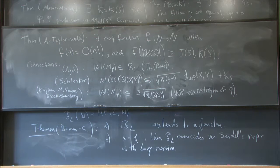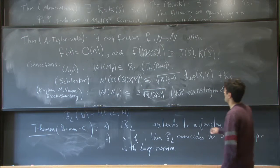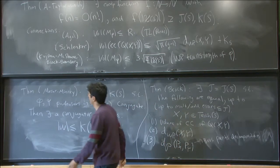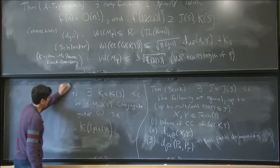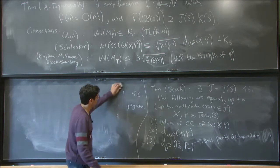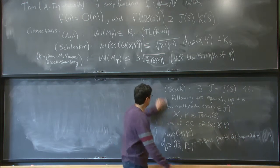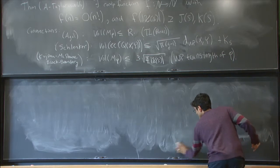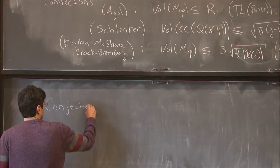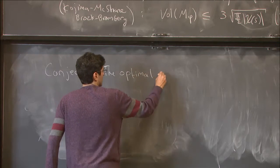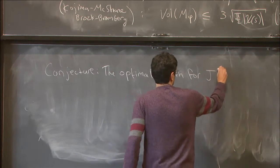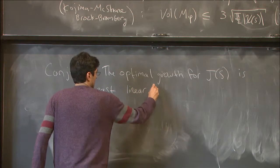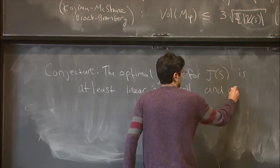People have been thinking about these kinds of questions. Now I want to discuss a conjecture about how sharp our results are for Brock's theorems. The short form of the conjecture is: not at all. More precisely, the conjecture is that the optimal growth for J(S) is at least roughly linear in the absolute value of the Euler characteristic, and at most quadratic.